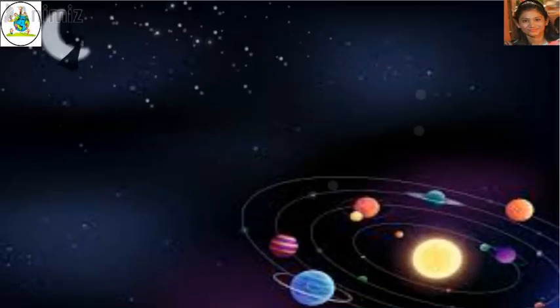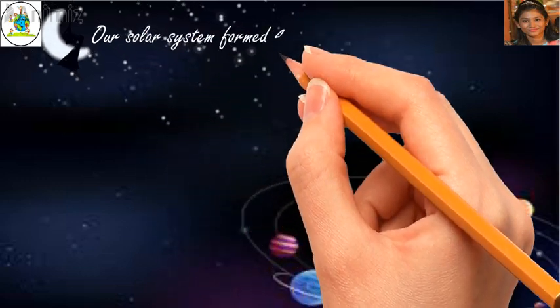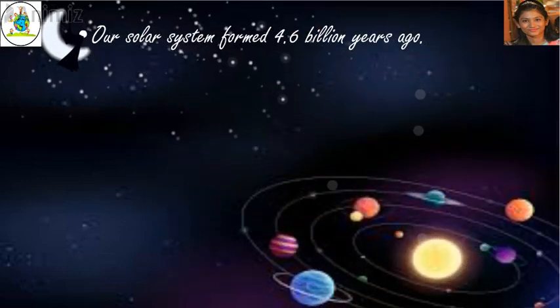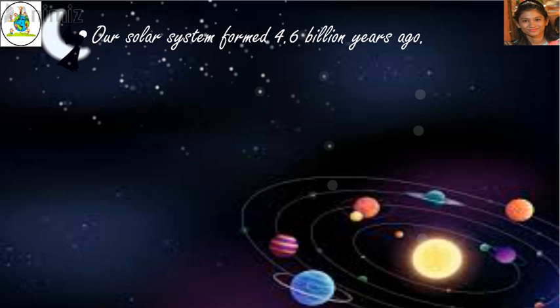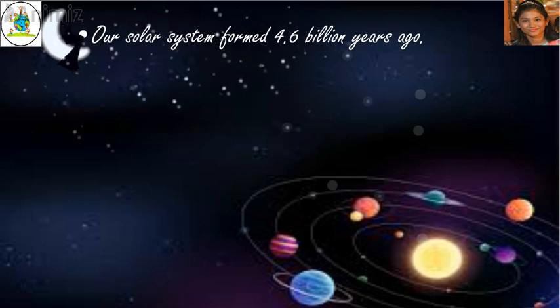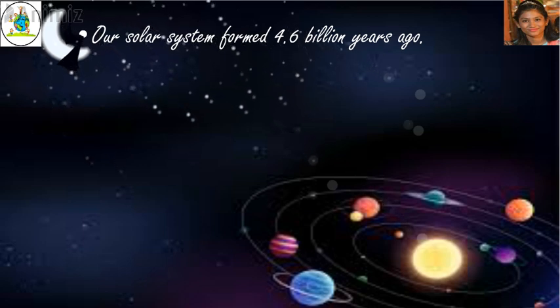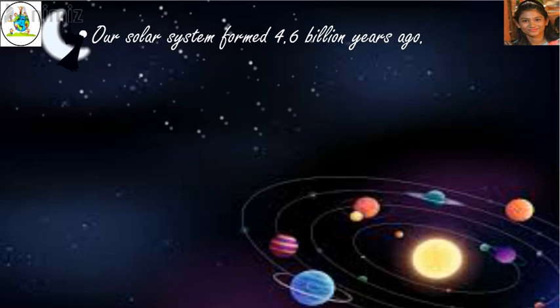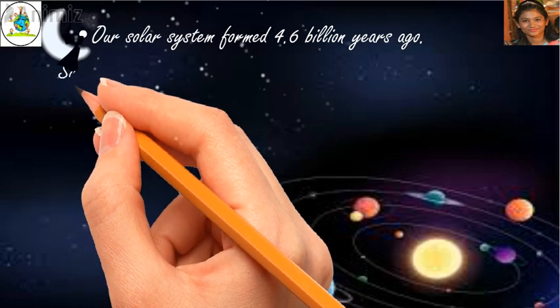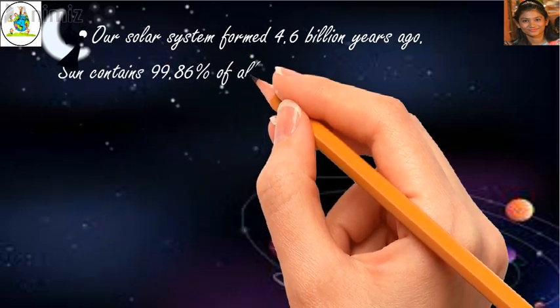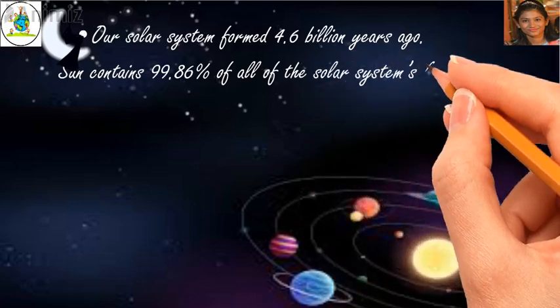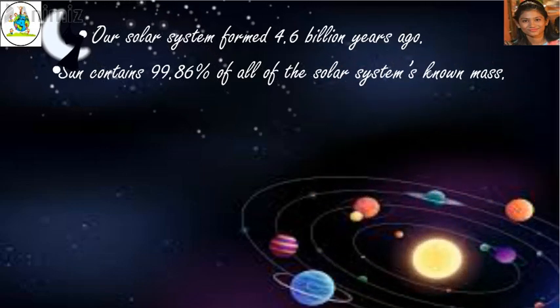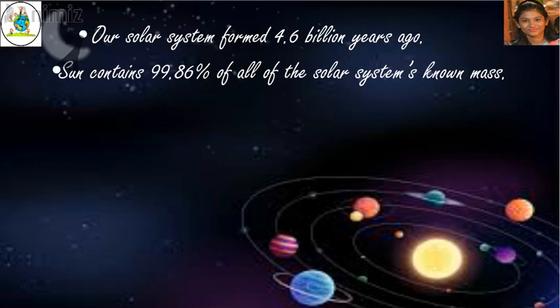Friends, now we are going to learn some facts. Our solar system was formed 4.6 billion years ago. Oh, it's a long time, right? Our solar system contains 99.86% of all the solar system's known mass.